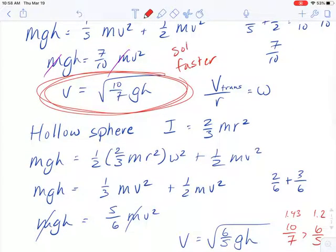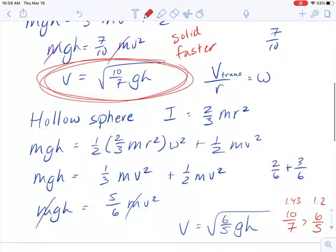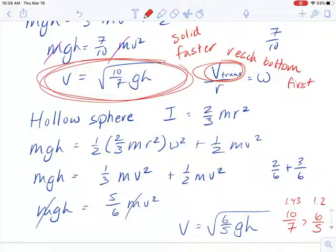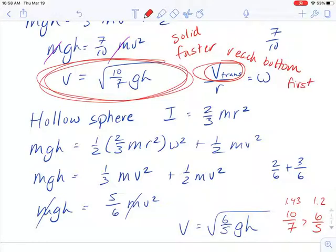So 10-sevenths is greater than six-fifths, which means that this solid sphere is going to be going faster at the bottom. It's going to have a faster translational speed. And that's what the answer says. It will reach the bottom first. Okay, I hope that helps. Let me know if not, and I will try again. Thank you.